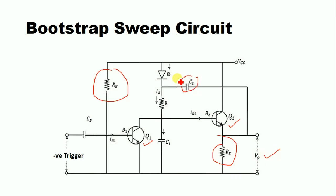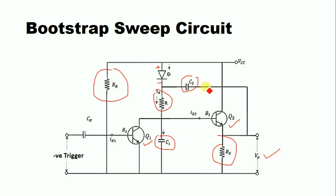The output is taken across resistance RE. The diode D has its anode connected to VCC and its cathode connected to the output V0. The cathode of diode D is also connected to resistor R, which is in turn connected to capacitor C1. The positive terminal is connected to VCC and the negative terminal is connected to C2, which is also connected to the output V0. The voltage across capacitor C1 provides the output voltage V0, since C1 and RE are connected in parallel.